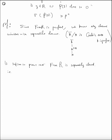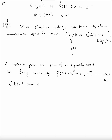We have to prove that for any monic polynomial p(x) = x^d + a_{d-1} x^{d-1} + ... + a_1 x + a_0 that is separable, it has a root in the fraction field of R.